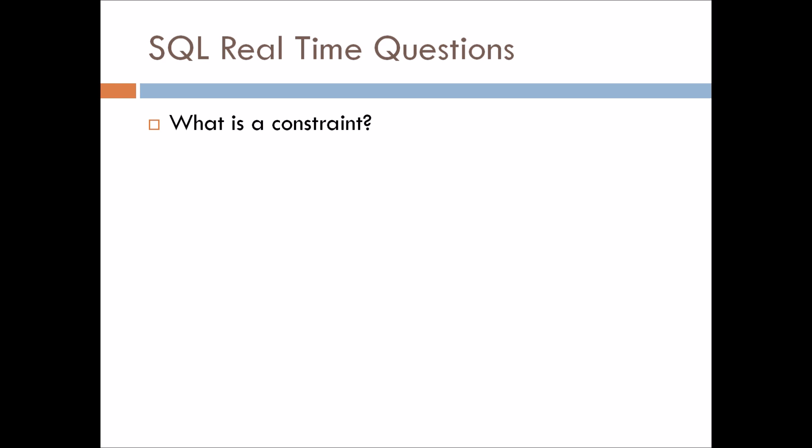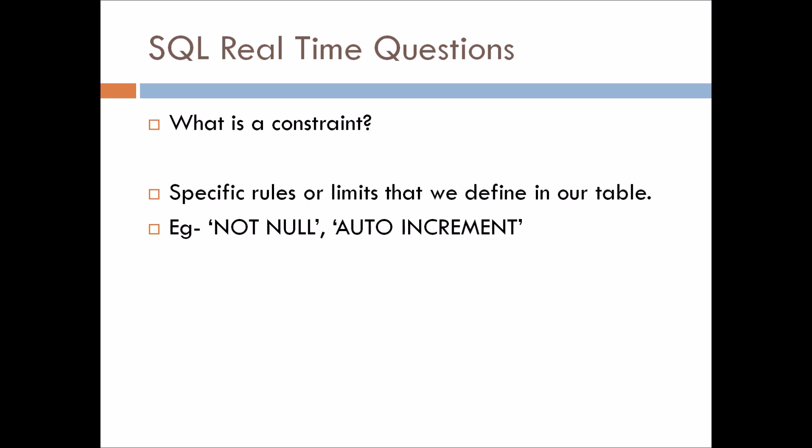What is a constraint? These are the specific rules or limits that we define in our table. For example, not null, autoincrement, and many others like primary key and foreign key. So all of these are constraints.